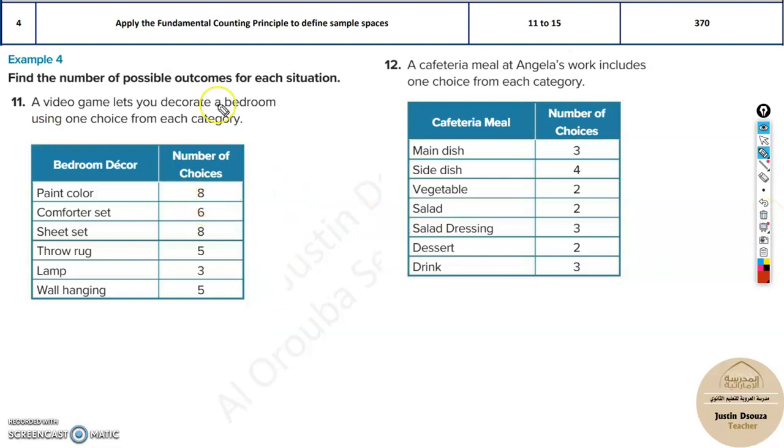It's very simple. The fundamental counting principle states that if you just multiply all the different categories, you will get the answer.